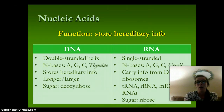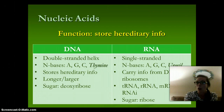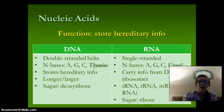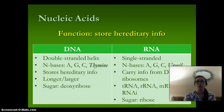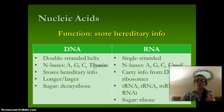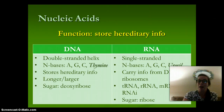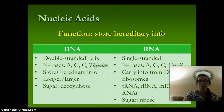RNA is going to be a single-stranded molecule. The nitrogen bases are A, G, C, and U. They carry the info from the DNA to the ribosomes — so from the nucleus to the ribosomes. We have tRNA, rRNA, mRNA, and RNAi, and the sugar is ribose.